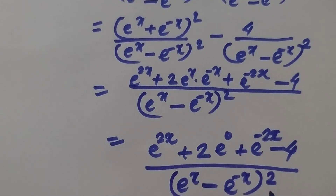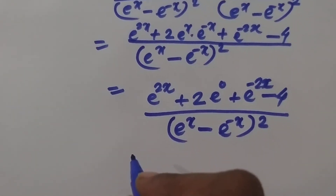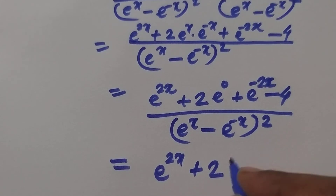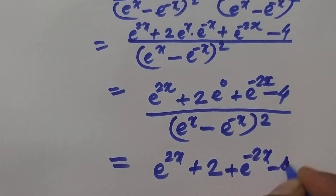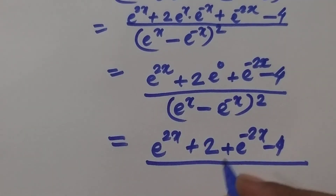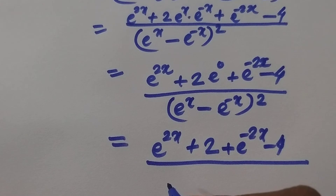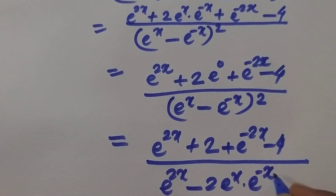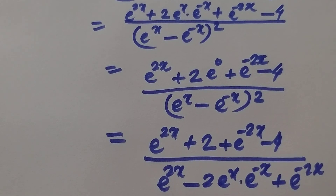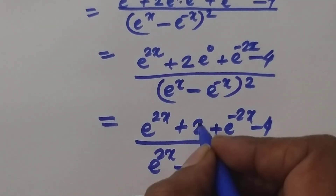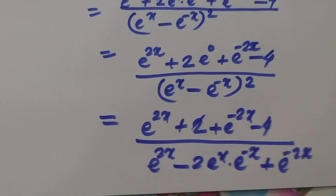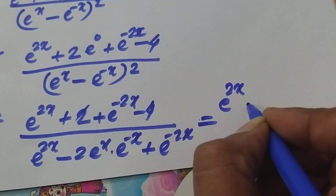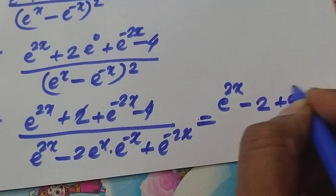So the numerator becomes e^(2x) + 2 + e^(-2x) minus 4, which equals e^(2x) minus 2 plus e^(-2x). For the denominator, expanding (a - b)² = a² - 2ab + b², we get e^(2x) minus 2·e^x·e^(-x) plus e^(-2x), and since e^x·e^(-x) = e^0 = 1, the middle term is minus 2.